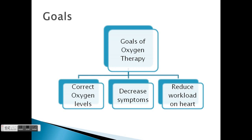Now, the goals of oxygen therapy. There are three important goals. The first is to correct the oxygen levels — both in the arterial blood and the alveolar oxygen levels. The second is to reduce the symptoms of hypoxemia. We will be reviewing the symptoms of hypoxemia in the next slides.